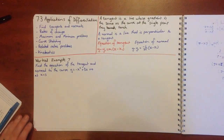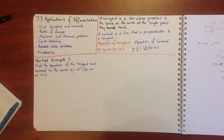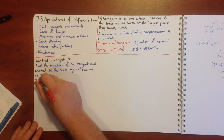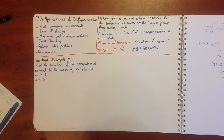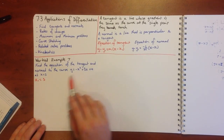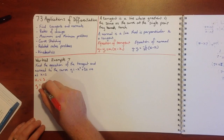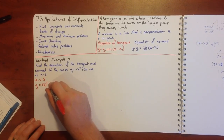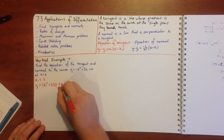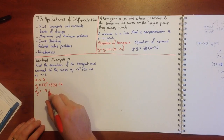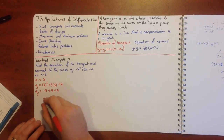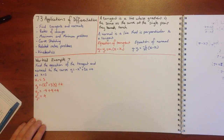Example 7 asks us to find the equation of the tangent and normal to the curve y equals negative x squared plus 3x plus 4 at x equals 3. Straight away they tell us x1 equals 3. From that we find y1 by substituting x1 back into the equation: y1 equals negative 9 plus 9 plus 4, so y1 equals 4. We now have our x1 and y1.